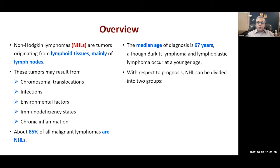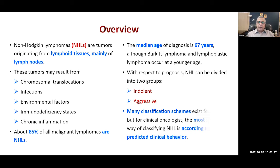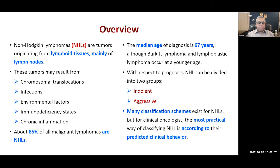With respect to prognosis, NHL can be divided into two groups: indolent, which means slow growing, and aggressive, which means fast growing. Clinically, for oncologists, the most practical way of classifying is according to their predicted clinical behavior. We'll go into all those details — how we predict the prognosis, what factors we take into account when we want to predict the course of the disease and the therapy we have to choose.